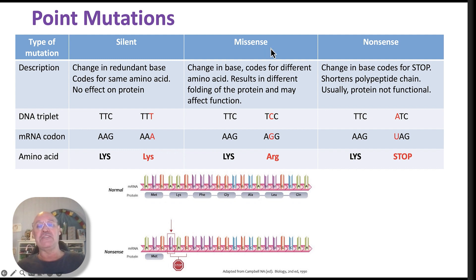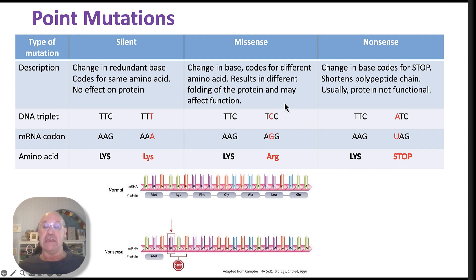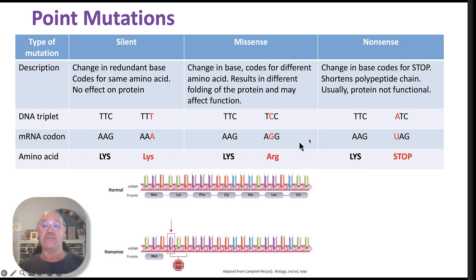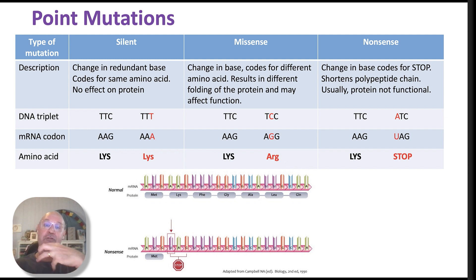The next type is a missense mutation. We have a change in the base that codes for a different amino acid. So one of the amino acids in our sequence — which might have a thousand amino acids in a polypeptide chain — gets changed. That has the potential to impact how the protein is folded and may affect the function of the protein, though it might not.